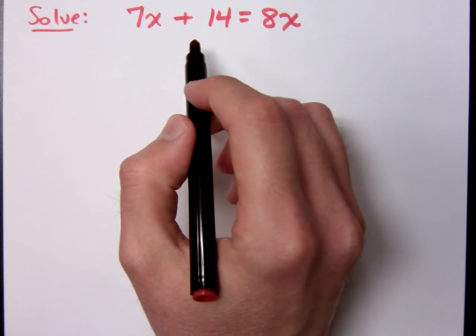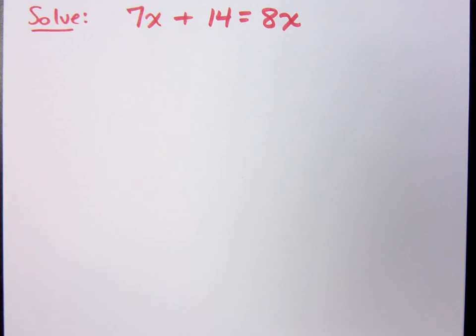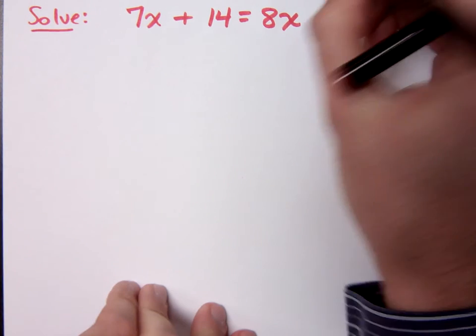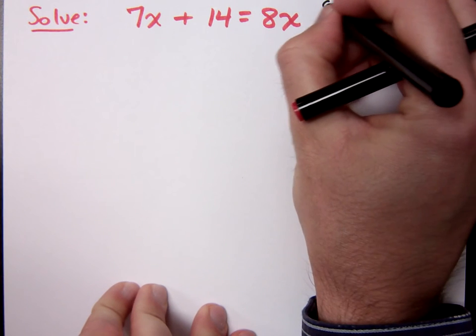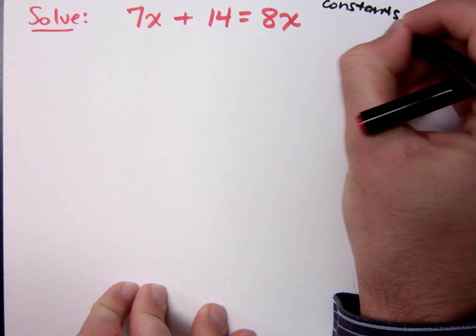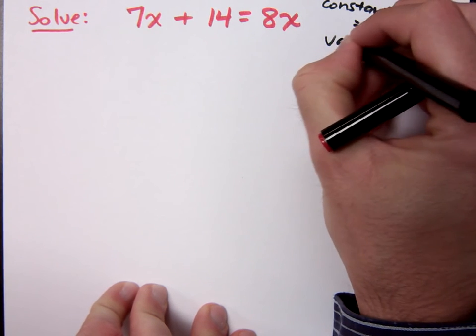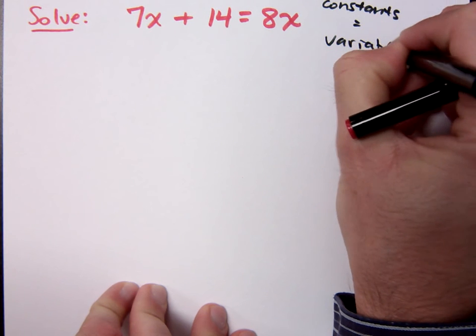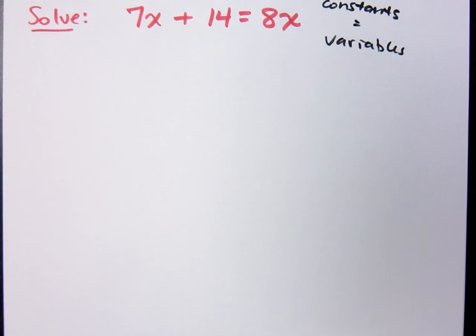So if I have this guy right here, one of the things that we need to remember when we're solving these guys is that you are trying to get constants on one side and you want variables on the other side. It's, you know, just like the offspring said, you've got to keep them separated. So variables on one side, constants on the other side, what's the easiest way to do that?